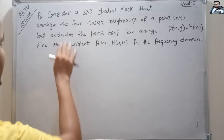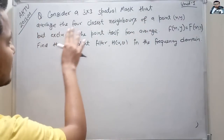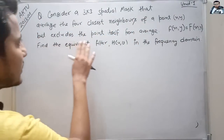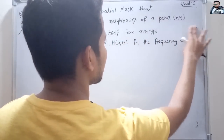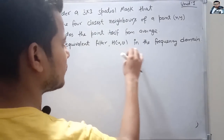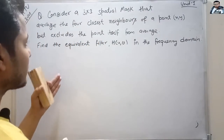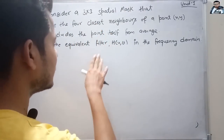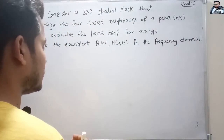The question says: consider a 3x3 spatial mask that averages the 4 closest neighbors of a point (x, y), but excludes the point itself from the average. We have to find the equivalent filter h(u,v) in the frequency domain — that is, convert the spatial domain filter to the frequency domain filter.